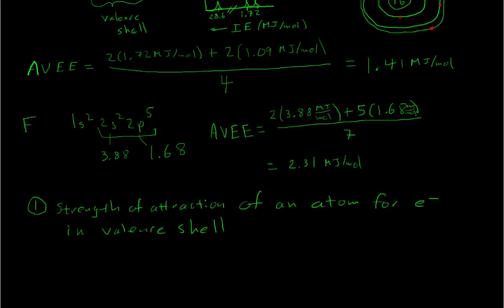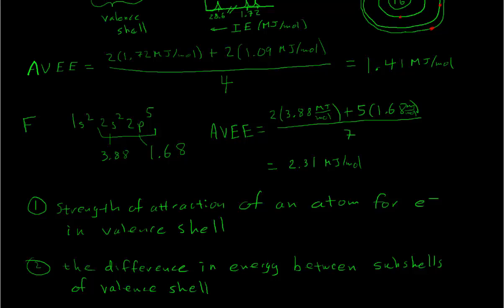The second thing that AVEE tells us is the difference between the energies in the two subshells. For carbon, the difference between 1.72 and 1.09 is much smaller than for fluorine, where the difference is between 3.88 and 1.68. So AVEE tells us the difference in energy between the subshells of the valence shell — the bigger the AVEE, the bigger the difference in energy of the two subshells.